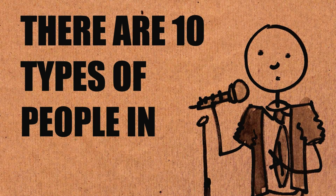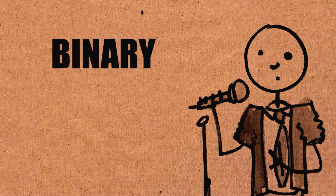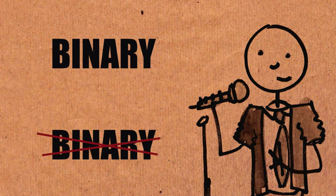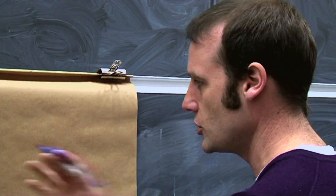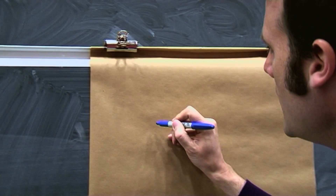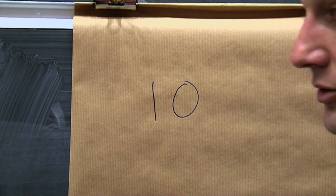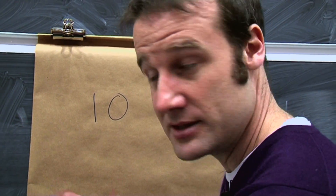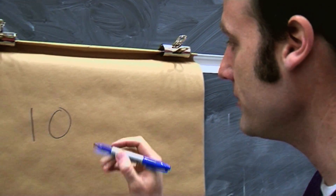There are 10 types of people in the world: those who understand binary, and those who don't. It doesn't really work when it's said, but written down the joke kind of holds, because if you write a 1 and then a 0, that looks like the number 10, because you expect it to be a normal base 10 number.